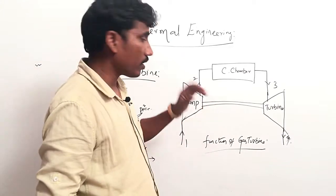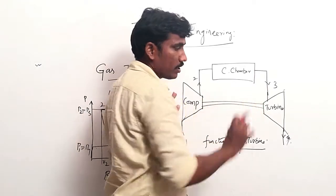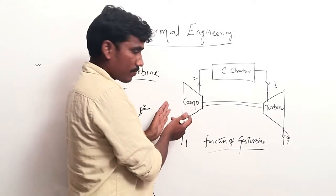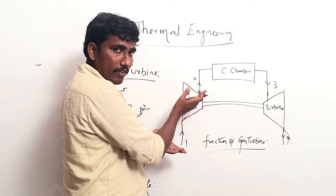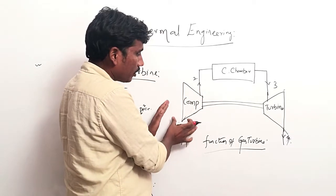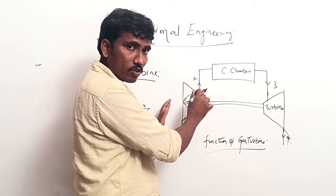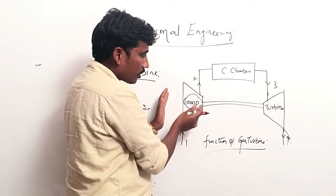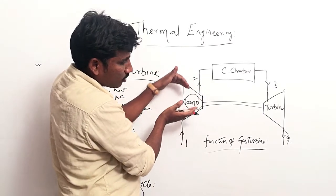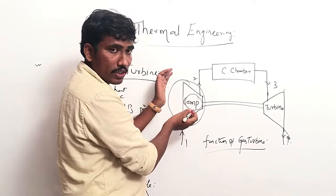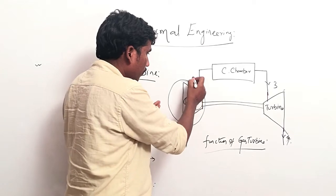This figure describes the process and function of a gas turbine. The major components are the compressor, combustion chamber, and turbine. In the compressor, you can observe that the cross-sectional area is gradually decreasing. Why? Because we suck air from the atmosphere and try to compress it. If the cross-sectional area decreases, the pressure increases. So in the compressor, we compress the air to maximum pressure P2.